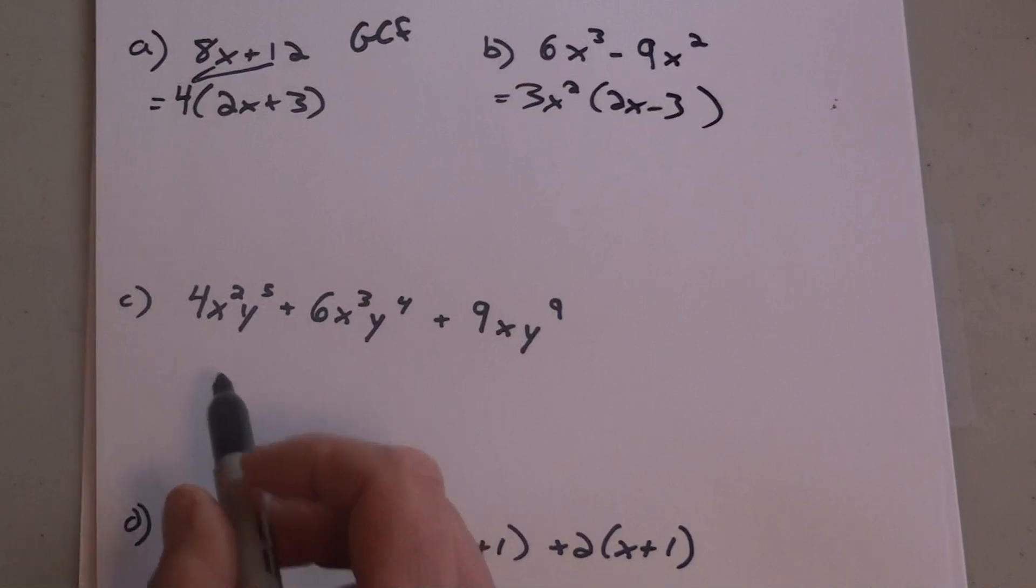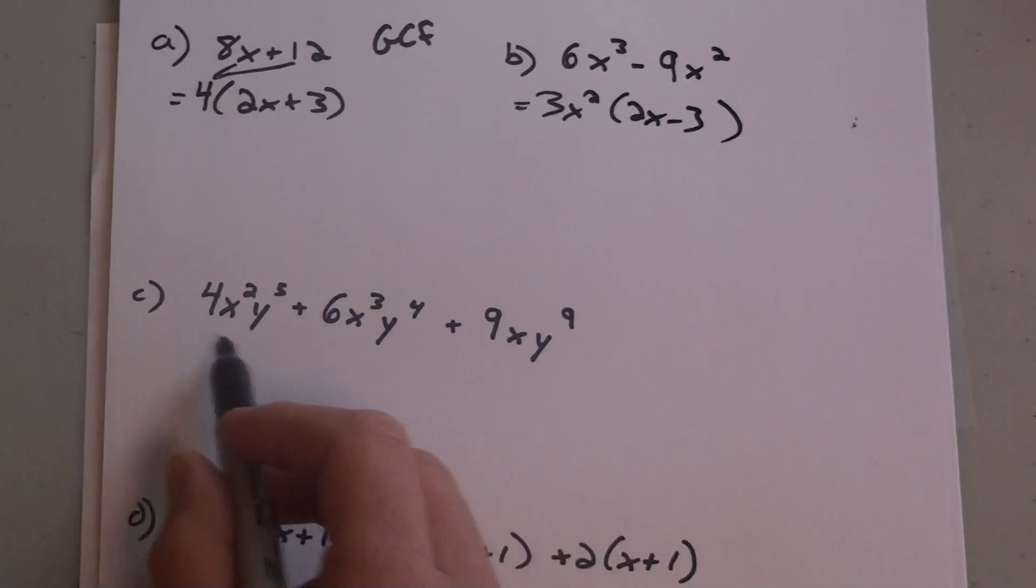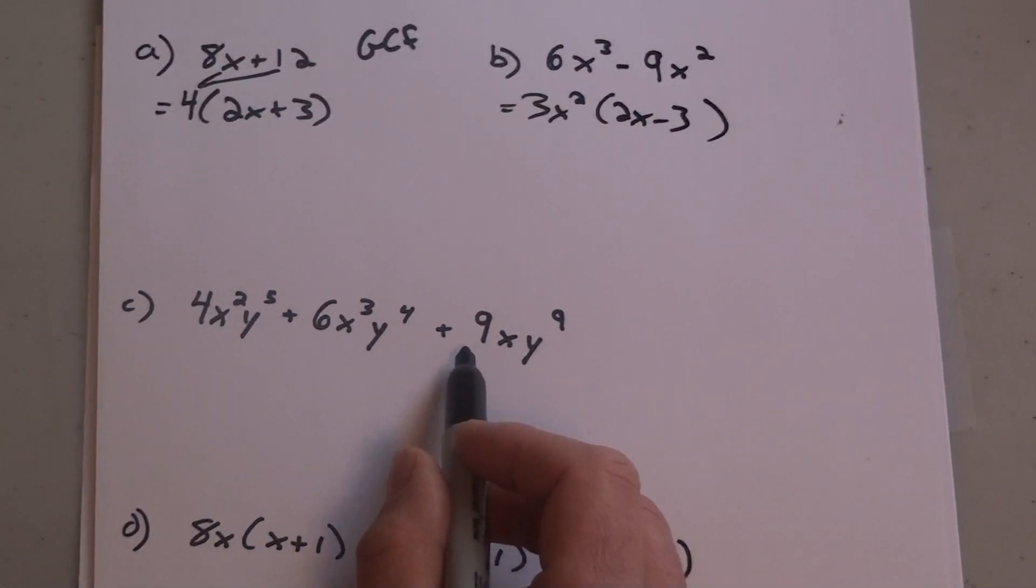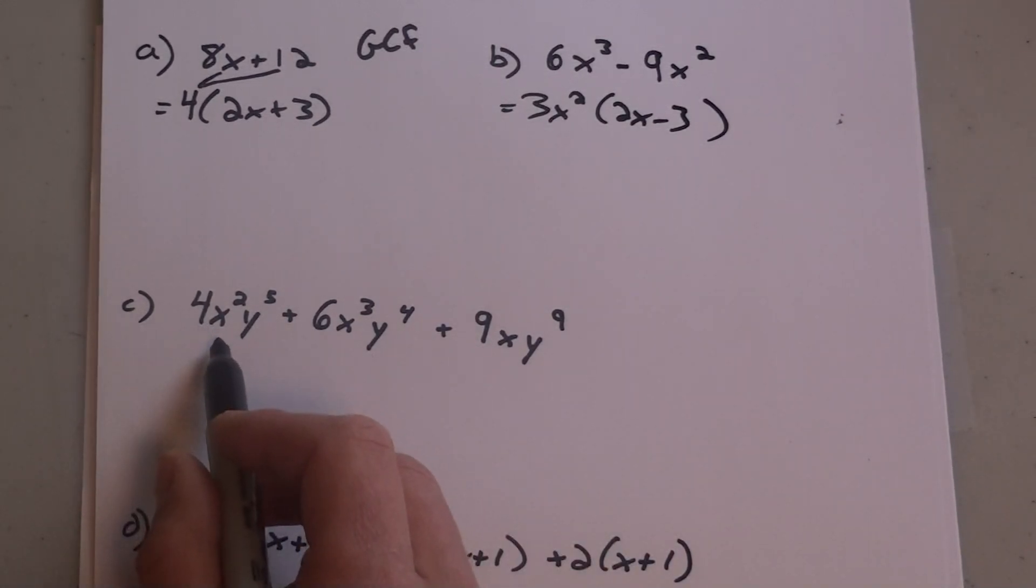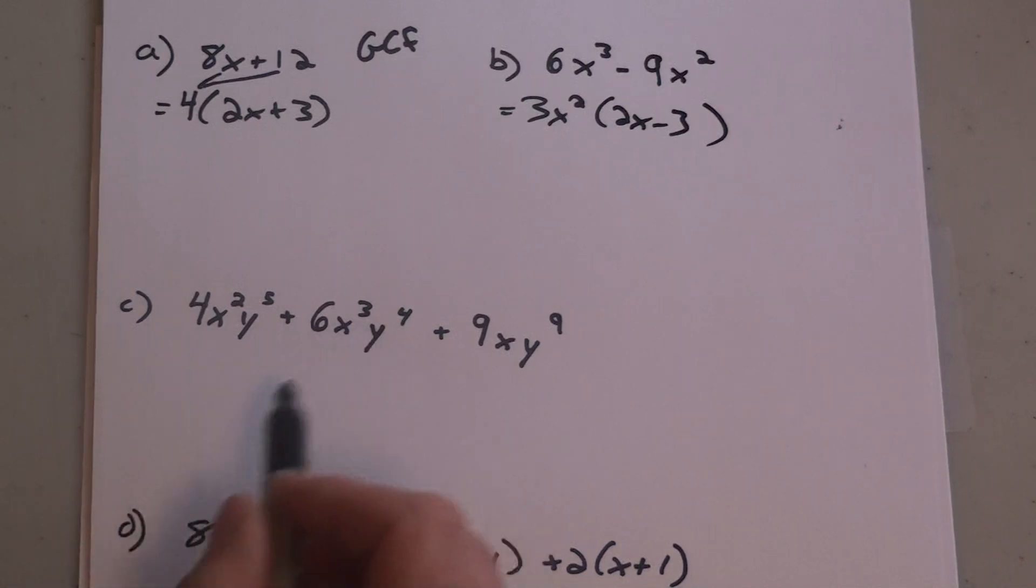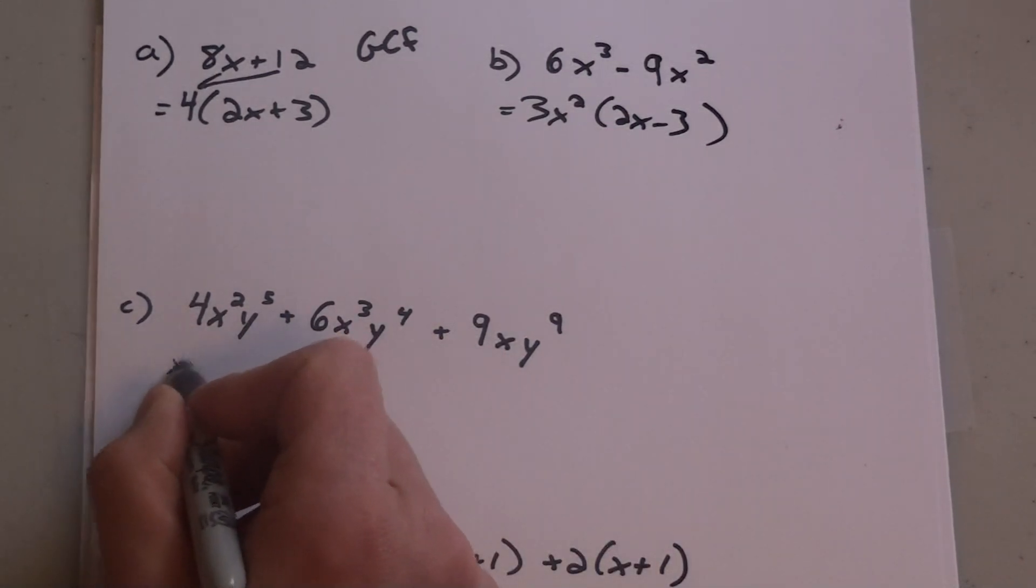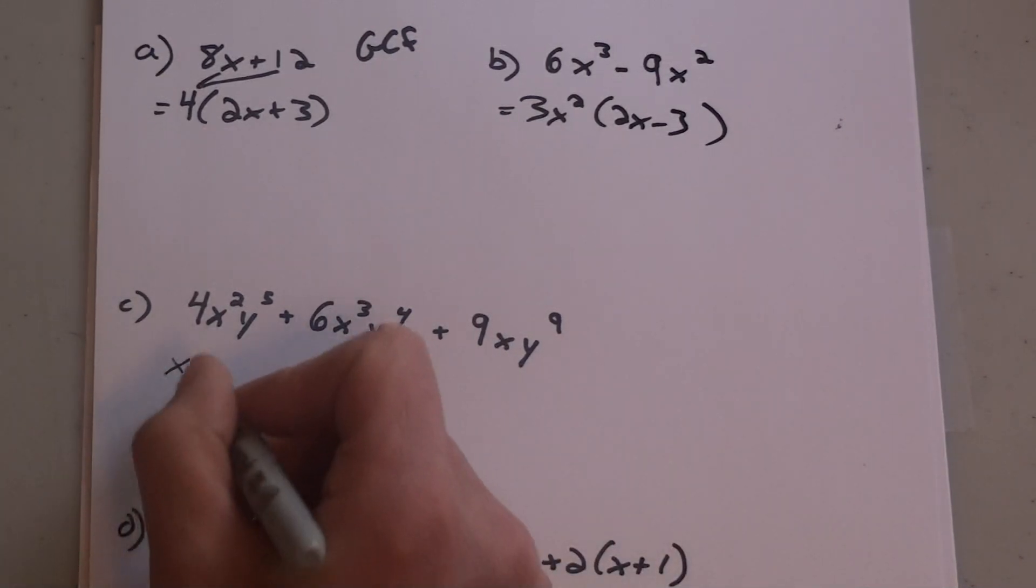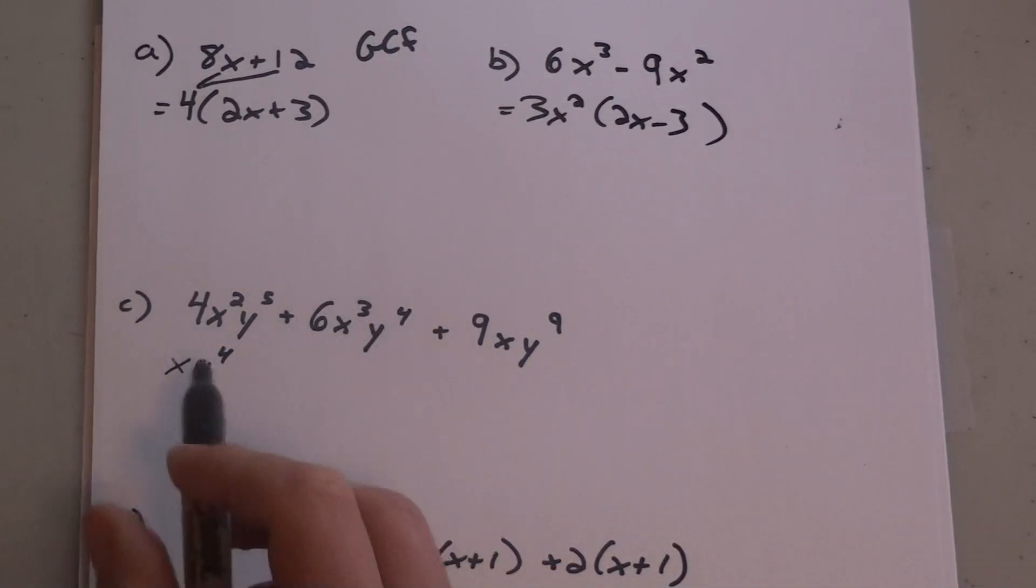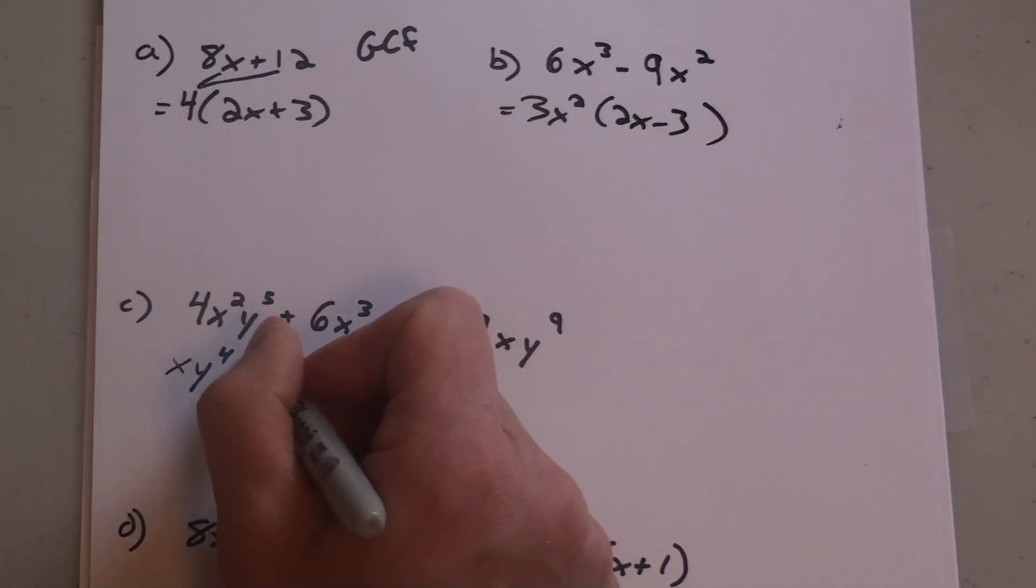For the third example, you're going to look for what's in common with all of them. You have 4, 6, and 9. There are no coefficients you can divide from all of them, but looking at your variables and exponents, you can. I'm going to divide out—they all have at least one x in it, and they all have at least four y's. So I can divide out an x and y to the exponent of 4.